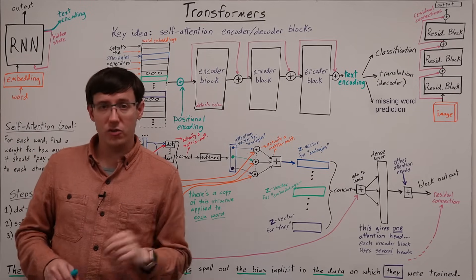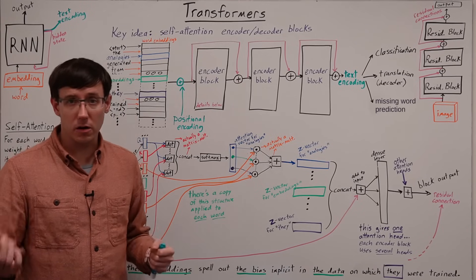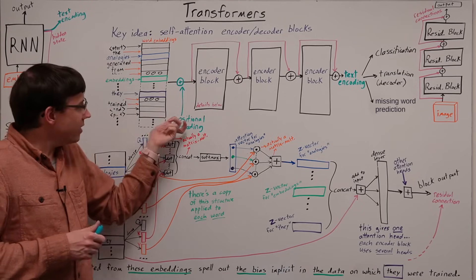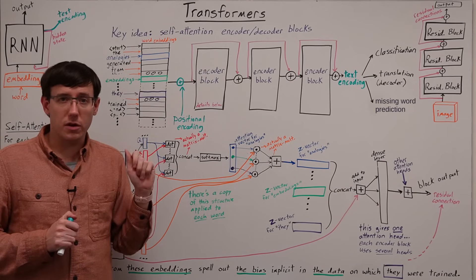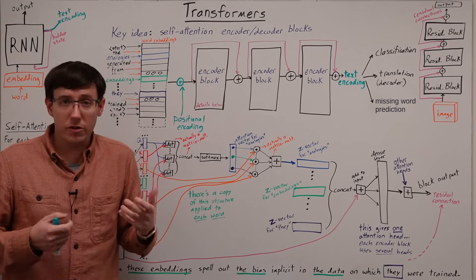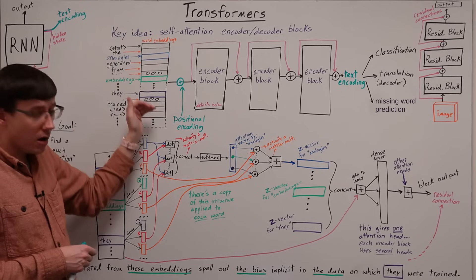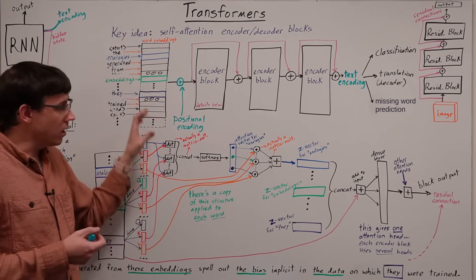some of which have been manually engineered and some of which have been learned. But as long as we give the network some useful information about position, then it can learn things that are dependent on word ordering or word proximity.